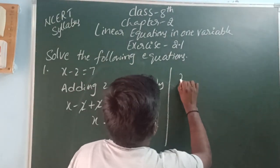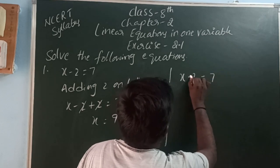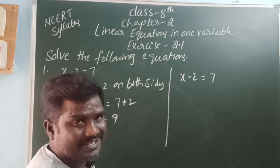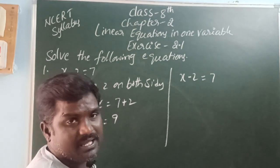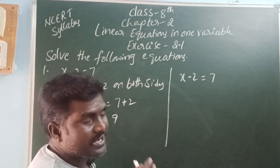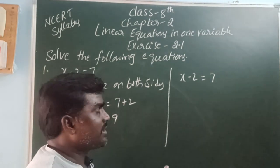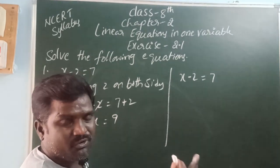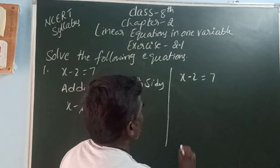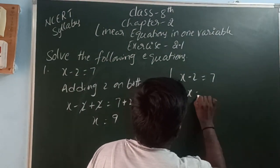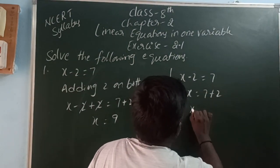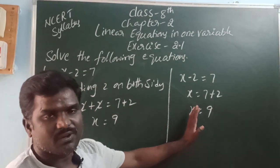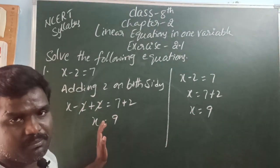With transform method: x minus 2 is equal to 7. A plus variable or constant moving to the right side becomes minus. A minus moving to the right side becomes plus. An into (multiply) variable or constant moving to the right side becomes divide, and divide moving to the right side becomes multiple. So here, minus 2 is going to the right side as plus 2: 7 plus 2. That is, x is equal to 9. This method is called with transform method.